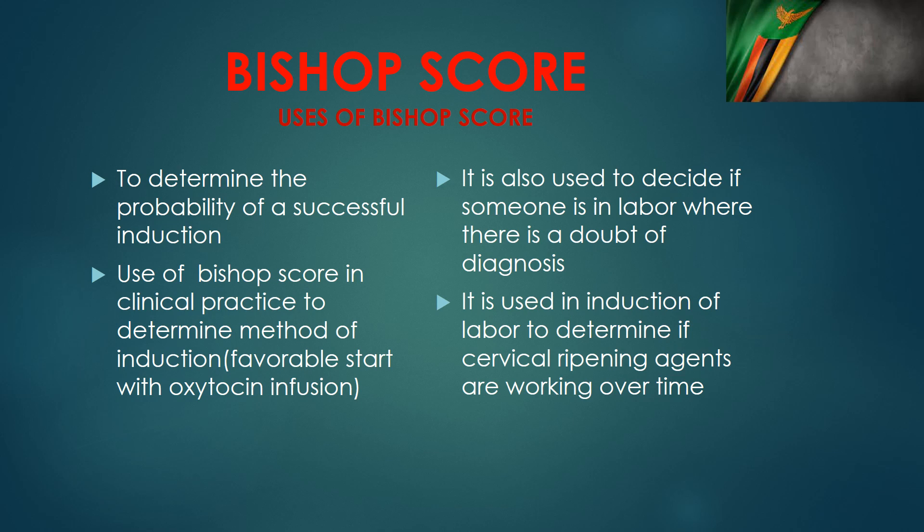Lastly, when we are inducing labor — putting misoprostol or oxytocin — we like to see an improvement in the Bishop Score. If it's improving, then we say there's progress in our induction process. If it's not improving, then we say that maybe the induction is failing. Those are some of the uses of the Bishop Score.